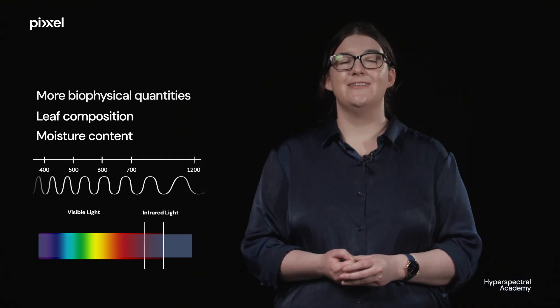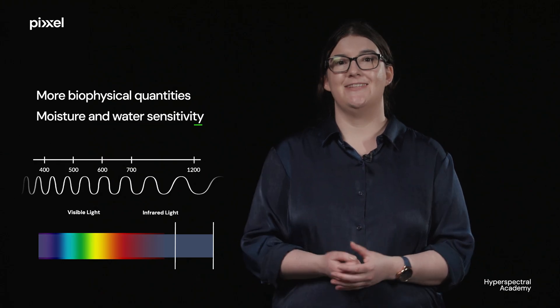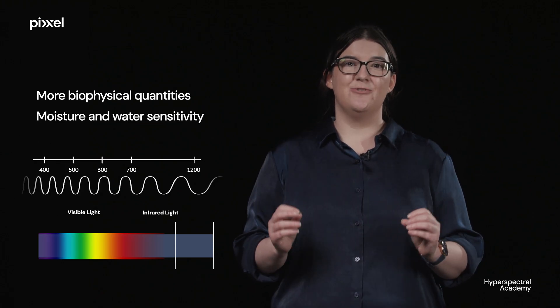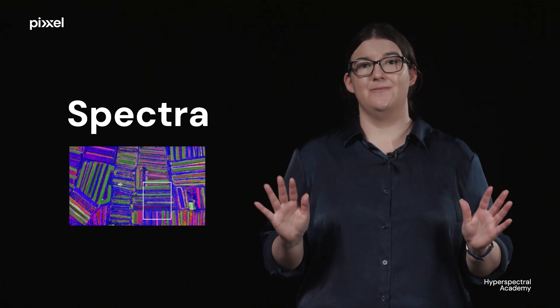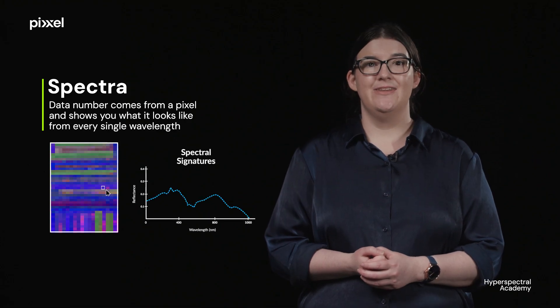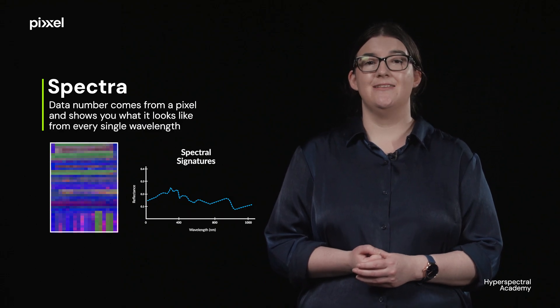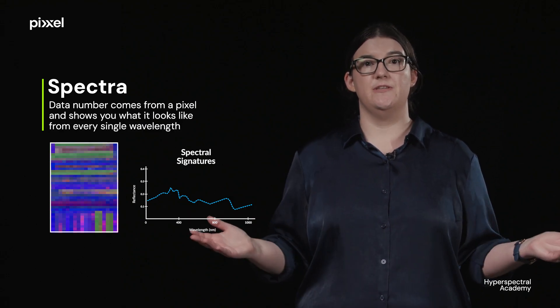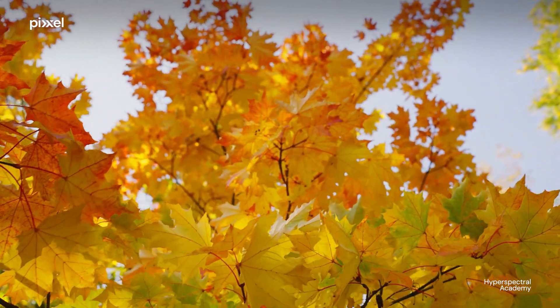The NIR will give us more information on how exactly the leaf is made, and changes in reflectance response will also give us information on moisture content. In the far near-infrared, we get more biophysical quantities, moisture and water sensitivity, because this area is once again more affected by the physical properties of the plant. Spectra is the data number that comes from a pixel and shows you what it looks like for every single wavelength. This is used to see how healthy vegetation is, and especially to try to find out what kind of species or subspecies it is, because minor changes in the spectra will show us changes in the color and chlorophyll in the leaves.